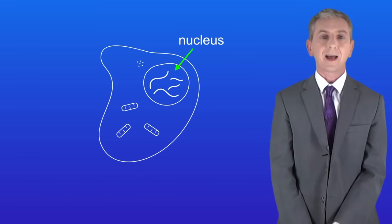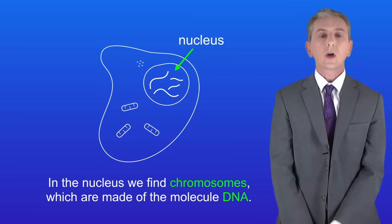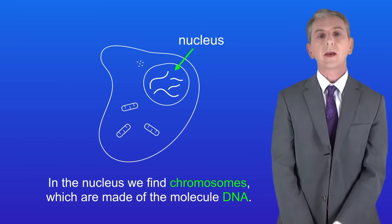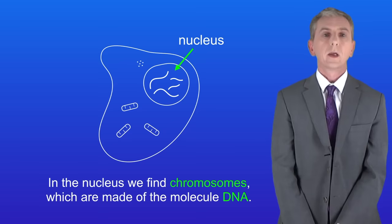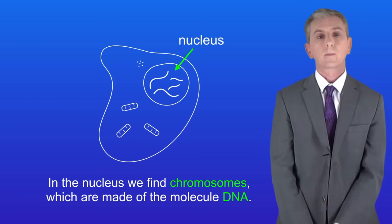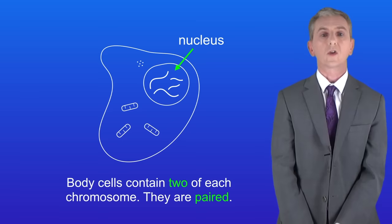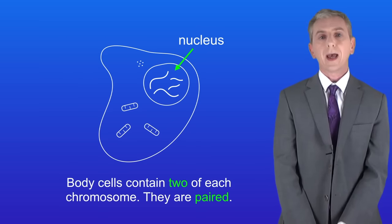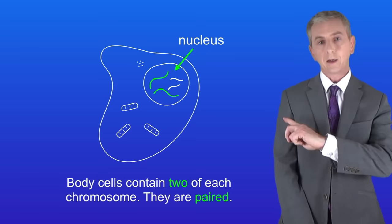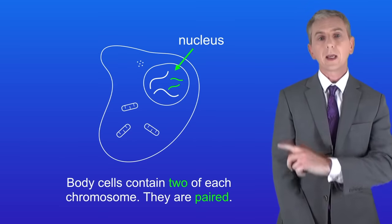We've already seen that both plant and animal cells contain a nucleus, as shown here. In the nucleus we find chromosomes, and they're made of the molecule DNA. This cell contains four chromosomes. One key fact is that body cells contain two of each chromosome — in other words, they're paired. In this cell we can see a pair of long chromosomes and also a pair of short chromosomes.